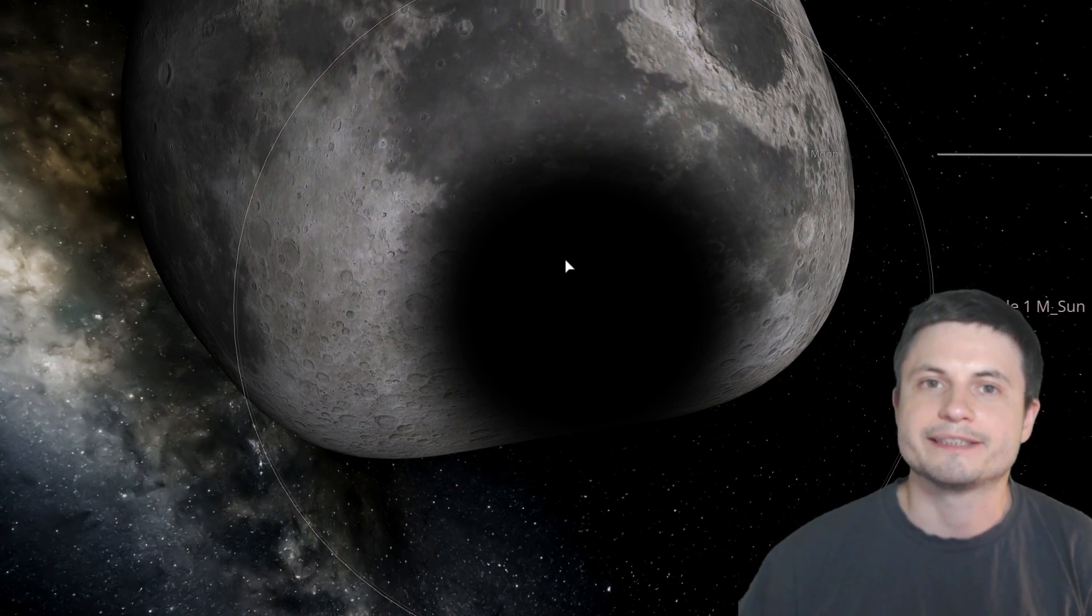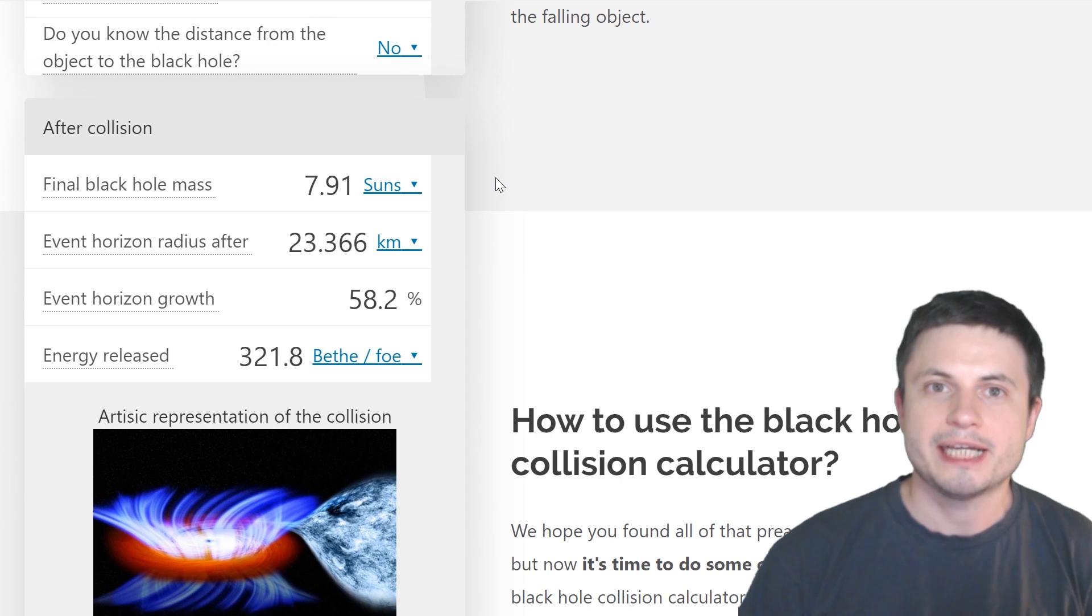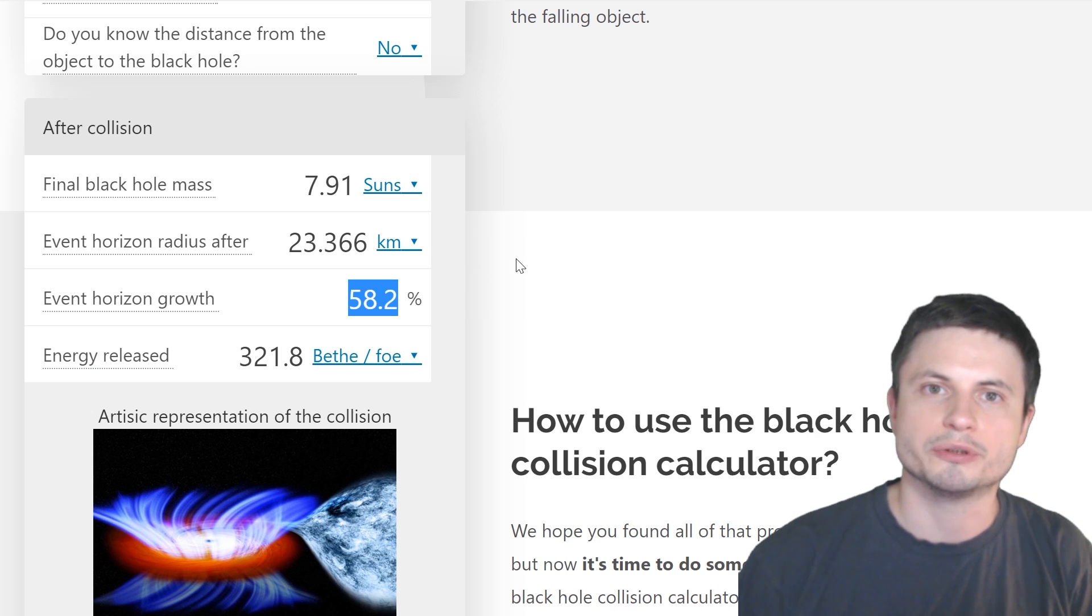So let's just say that something falls into this black hole. Let's start with a typical star. So here we have a star that's about three masses of the sun falling into this black hole. And you'll notice that at the end of the collision, the mass of the black hole is 7.91 masses of the sun. Its event horizon has increased to about 23.4 kilometers. And this number shows you the total growth of the black hole in terms of size. So it grew by about 58%.